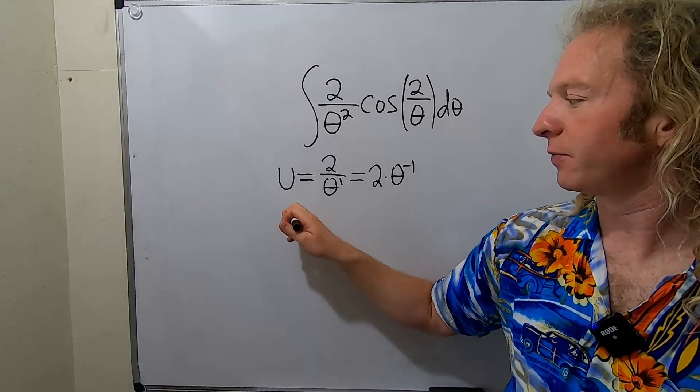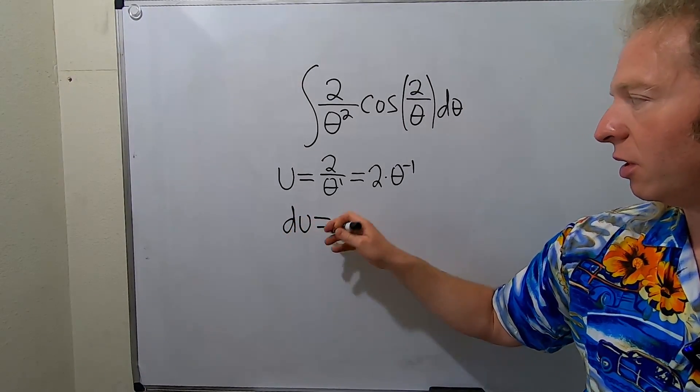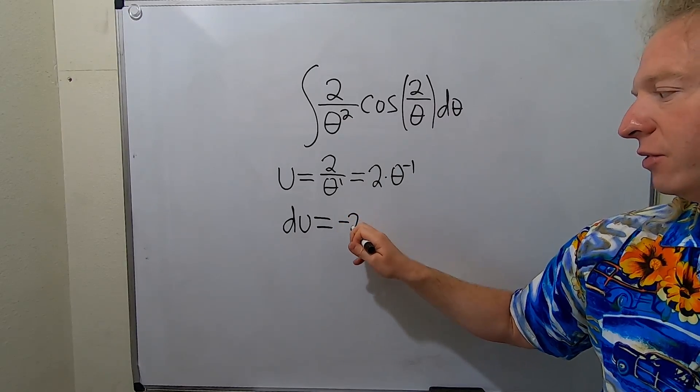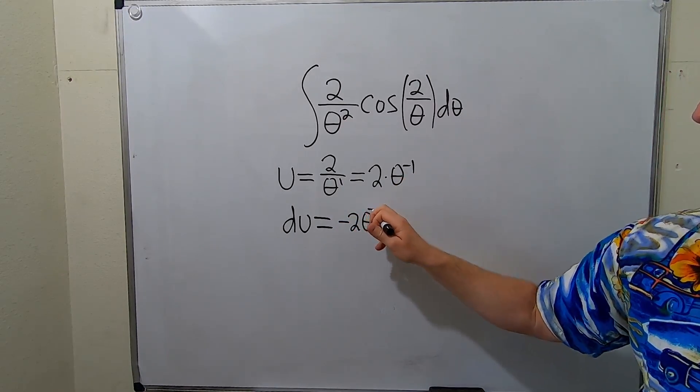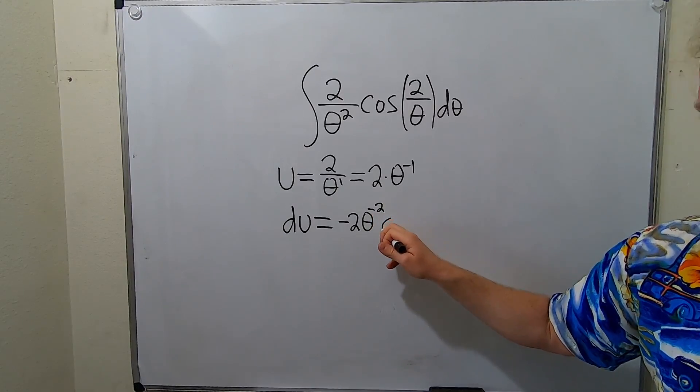Now we take the derivative, so du. You put the negative in the front, so you get negative 2 theta, and then subtract 1, so negative 2. Then we have d-theta.